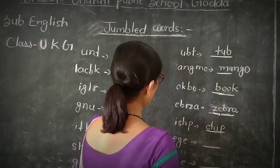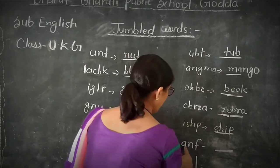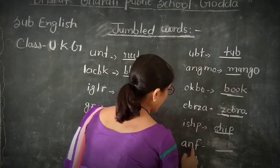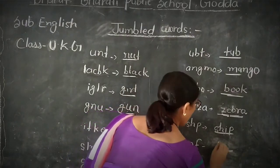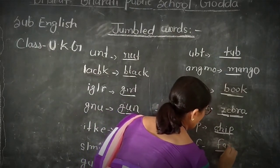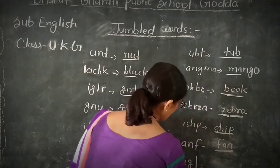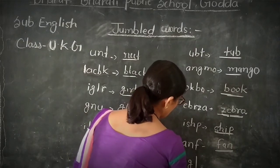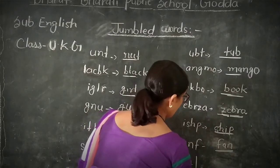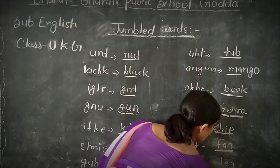Next word. A, N, F — FAN. F, A, N — FAN. Next word: E, G, F — will be E, G, L — LEG. L, E, G — LEG.